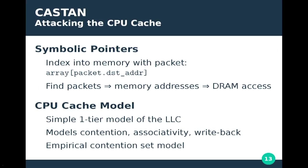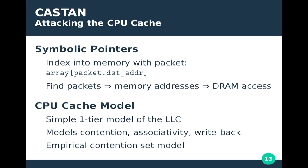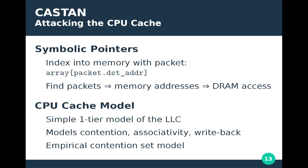Attacking the CPU cache arises whenever we have symbolic pointers — when you index memory with something based on part of the packet, such as indexing an array with the IPv4 destination address. We need to find a sequence of packets leading to a memory access pattern that persistently accesses DRAM, which definitely slows everything down. To do this, we created a CPU cache model describing how the cache works under different scenarios. It's a single one-tier model that models the last-level cache, including contention, associativity, and write-back. Due to CPU cache slicing and the proprietary hash function behind it, we don't have an algebraic model, so we use an empirical model based on actual cache measurements.